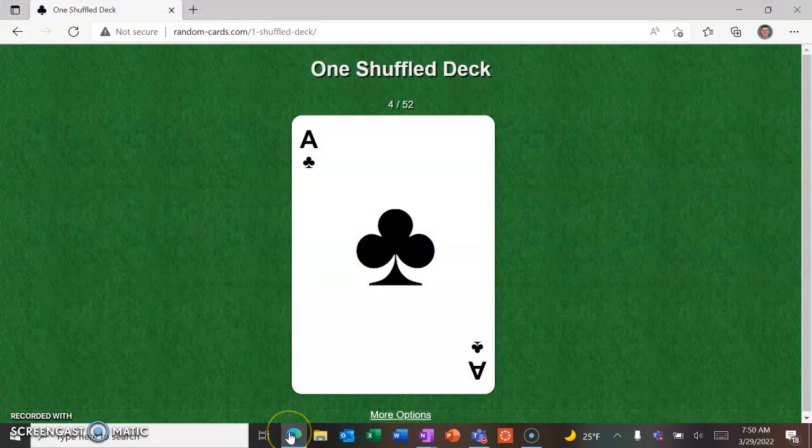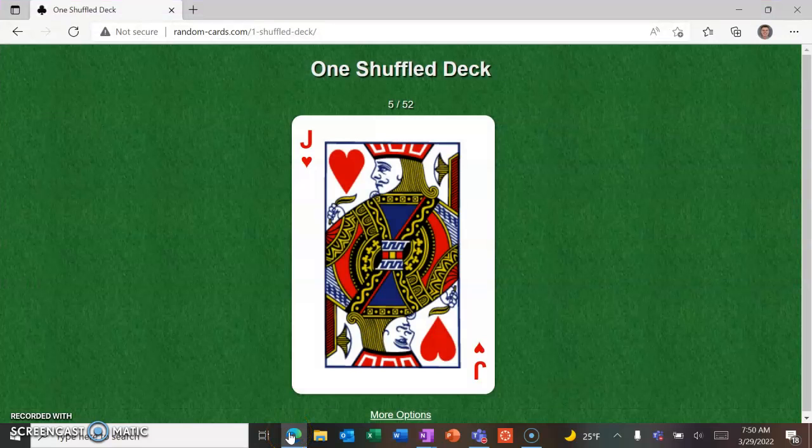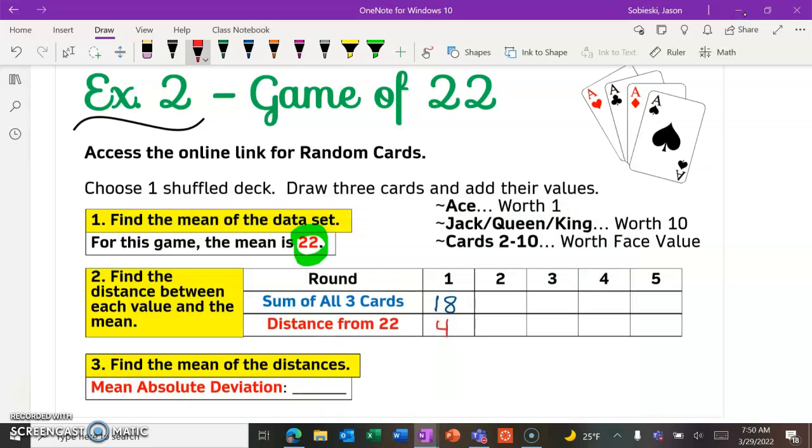Let's do one more round. So ace is one, plus jack is 11, plus four would give us a total of 15 for that. So that would be my total for those three cards. 15 is seven numbers away from 22.